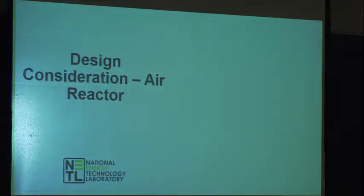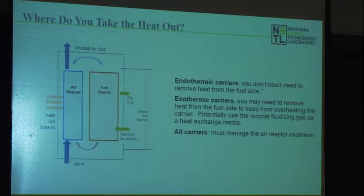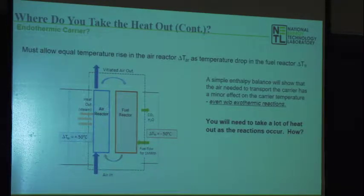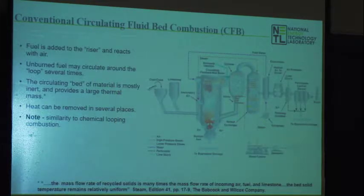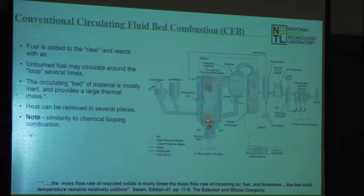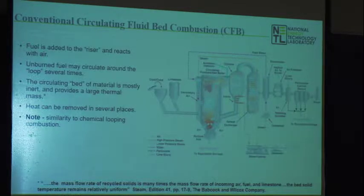Just because of time, and I know you want to hear about supercritical CO2 power cycles, I'm going to breeze through a couple of slides and then jump to SCO2. The question is: if you were designing the air reactor with all this heat coming out of the oxidizing metal, how do you get it out? It's an interesting design problem — similar to what you do with a circulating fluidized bed combustor. This schematic shows a real circulating fluid bed combustor: coal goes into the bottom, carried up by gas flow, separated in a cyclone, and circulates until all the carbon is gone.